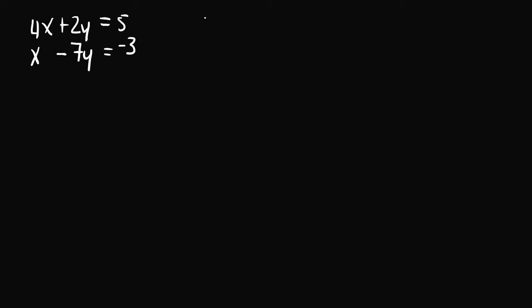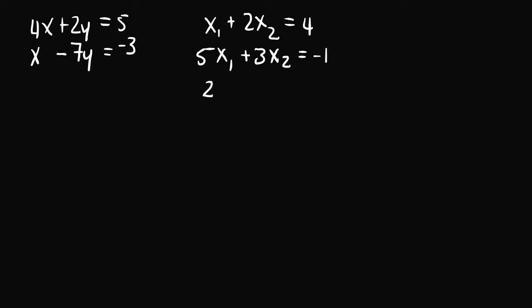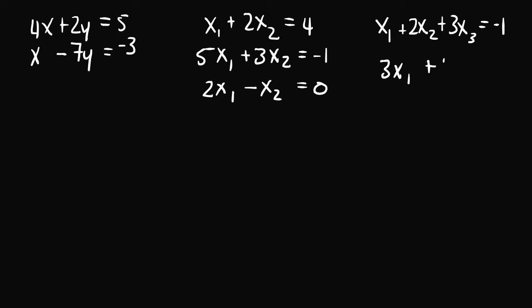Another system of linear equations might be x1 plus 2x2 is equal to 4, 5x1 plus 3x2 is equal to negative 1, and 2x1 minus x2 is equal to 0. Finally, another example might be x1 plus 2x2 plus 3x3 is equal to negative 1, and 3x1 plus 4x2 minus 3x3 is equal to 4.